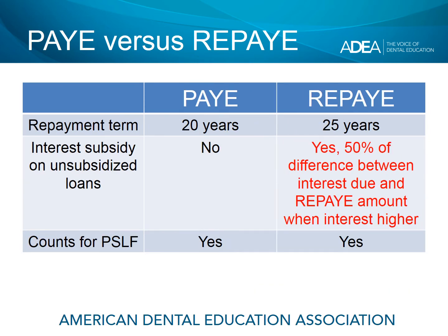The repayment term with PAY is shorter at 20 years. REPAY is 25 years for anyone with borrowing during graduate and professional school, which is certainly the case for dental school graduates. Notice the interest subsidy on unsubsidized loans — this is extremely important and one reason many recent graduates with significant debt may be looking at REPAY. An unsubsidized loan includes direct unsubsidized or direct PLUS loans, which for many dental school graduates comprises the majority, if not all, of their student loan portfolios.